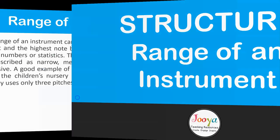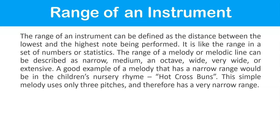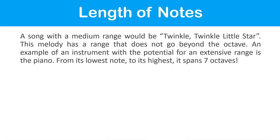The range of an instrument is the distance between the lowest and the highest note being performed — like the range in a set of statistics. A melody's range can be described as narrow, medium, an octave, wide, very wide, or extensive. Hot Cross Buns is a good example of a narrow range melody, using only three pitches. Twinkle Twinkle Little Star has a medium range that does not go beyond the octave. The piano has a potential for an extensive range — from its lowest to highest note it spans seven octaves.